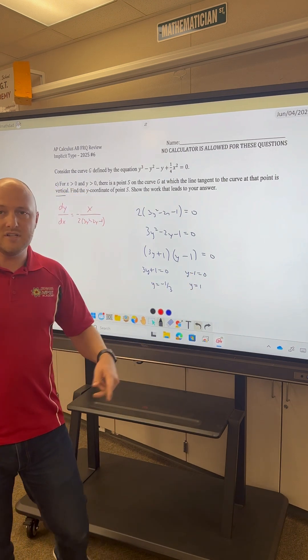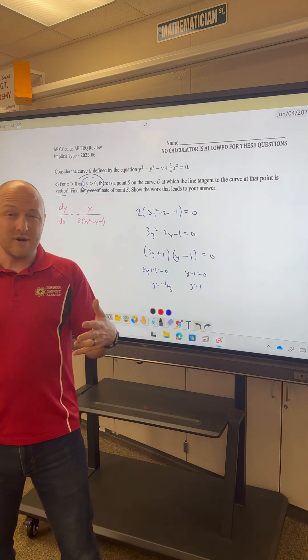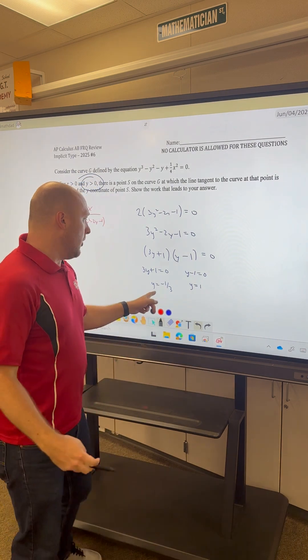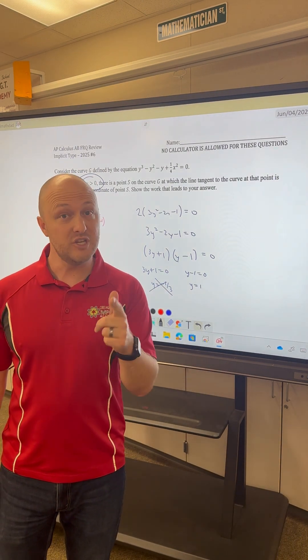Now there's two y-coordinates here, but it's very important to note the range restrictions, what they said in the beginning of the problem. y must be greater than 0. y equals negative 1 third? Not going to be our solution. Thus, y is equal to 1. Did you get it?